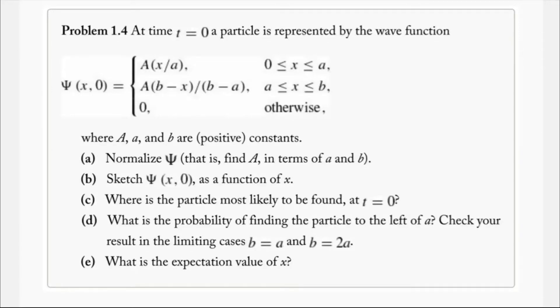Today we're taking a look at problem 1.4 from Griffith's Introduction to Quantum Mechanics, third edition. The problem states that there's a particle represented by a wave function psi, given by a piecewise function. We go from 0 to b for this function. Outside of that range, the wave function is equal to 0.